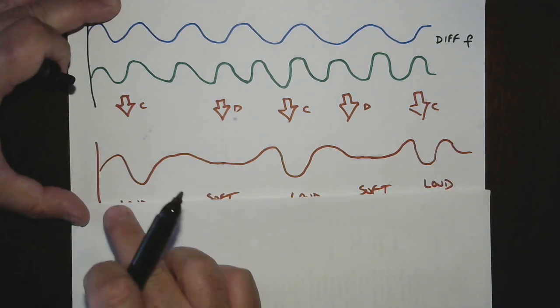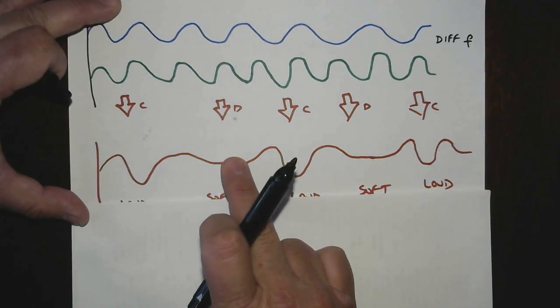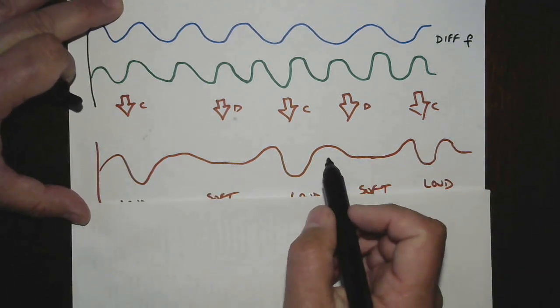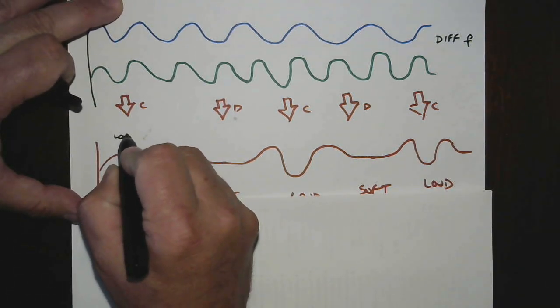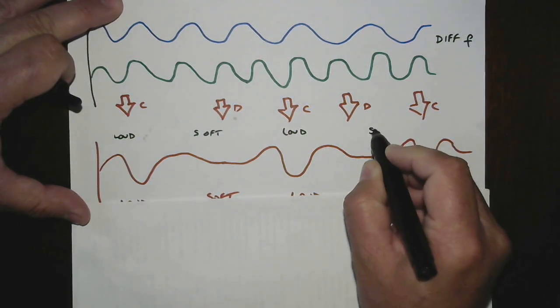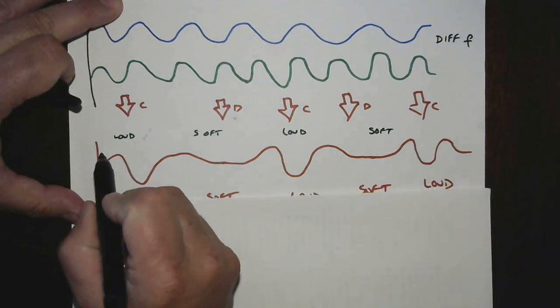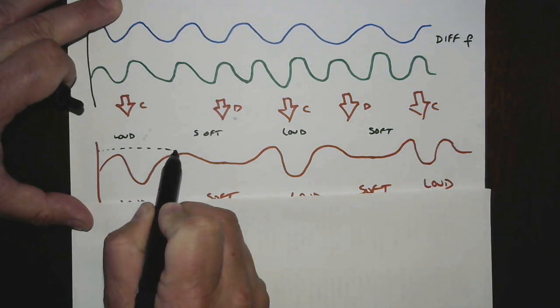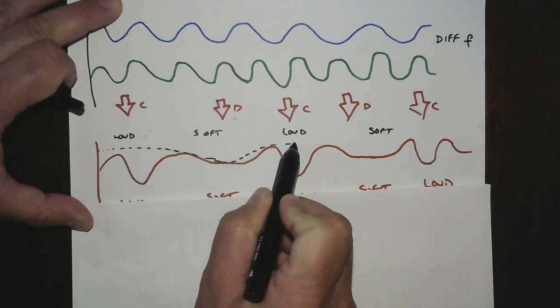And the resultant wave is going to be bigger for a little while, and then nothing, and then bigger for a little while. If this was a sound wave, this would be loud, and this would be soft in here, and this would be loud again, and this would be soft. And that's called an envelope. So the amplitude is high, and then low, and then high, and then low.